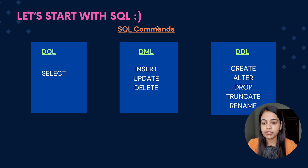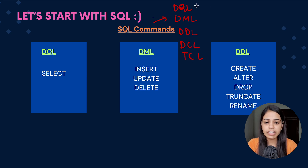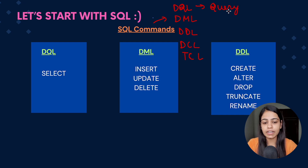If you remember, in the very start of the lectures we discussed about types of SQL commands. There we learned about five types: the first one was DQL, the second one was DML, the third one was DDL, the fourth one was DCL, and the fifth one was TCL. Now DQL basically stands for Data Query Language command — whenever we want to make any query into our data or fetch details from our database, we use this DQL command.